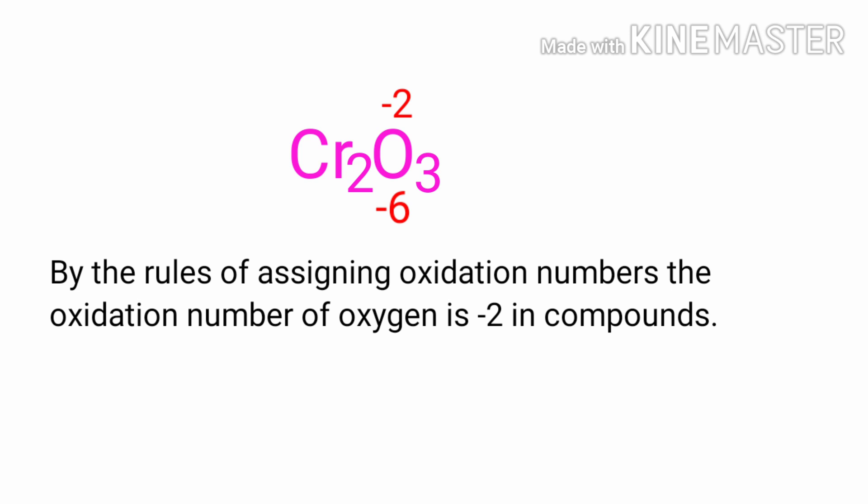As per rule, in a neutral compound, the sum of the oxidation numbers of the atoms is equal to 0. So the numbers at the bottom must add up to 0, meaning the number under Cr2 must be plus 6.